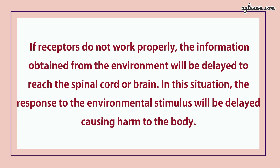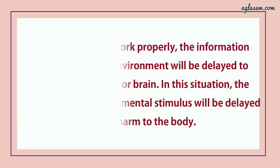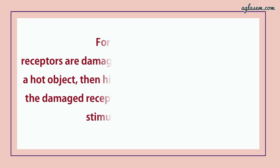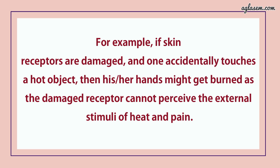If receptors do not work properly, the information obtained from the environment will be delayed in reaching the spinal cord or brain. In this situation, the response to the environmental stimulus will be delayed, causing harm to the body. For example, if skin receptors are damaged and one accidentally touches a hot object, then their hands might be burned as the damaged receptor cannot perceive the external stimuli of heat and pain.